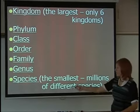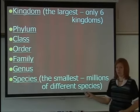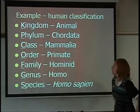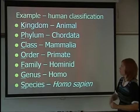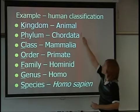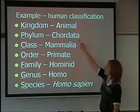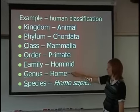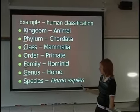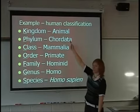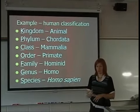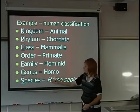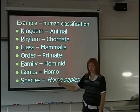On the planet there are millions and millions of different species but only six kingdoms. Here's an example of how human classification breaks down: we are in the kingdom Animalia, then chordata, mammalia — because we're mammals — primates, hominid, our genus is Homo, and our species is Homo sapien. You could group many things in animal, like fish and insects, but as you go down to species, you end up with just one type of living thing.